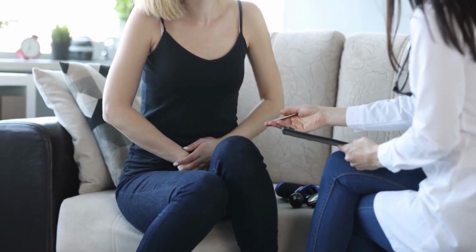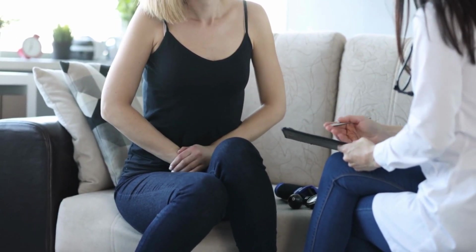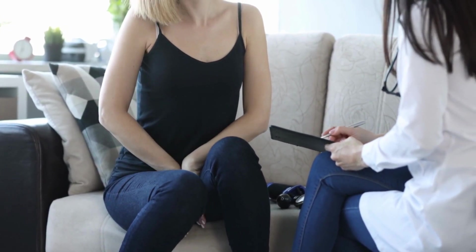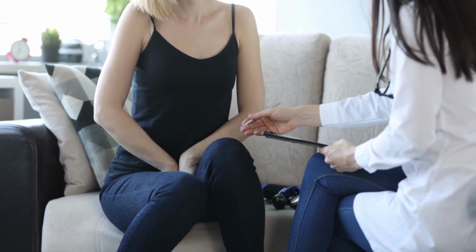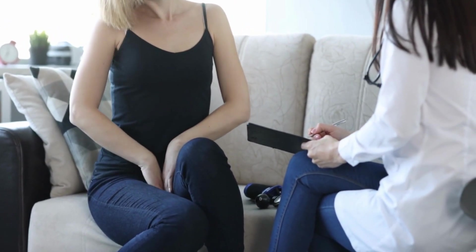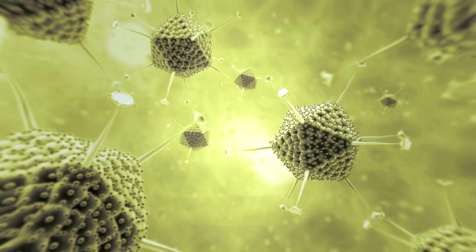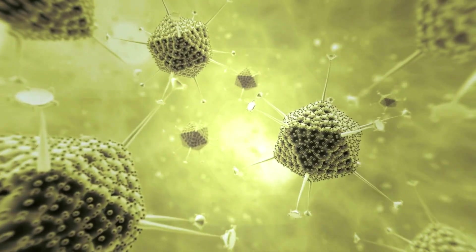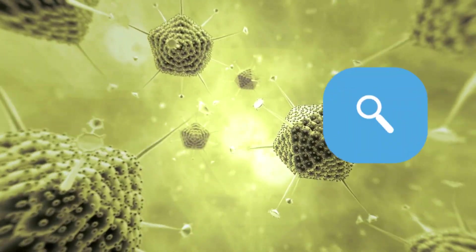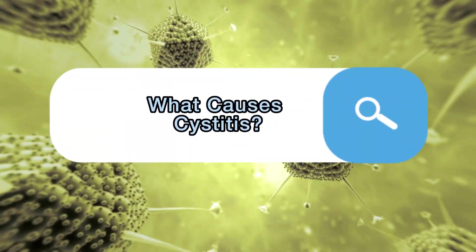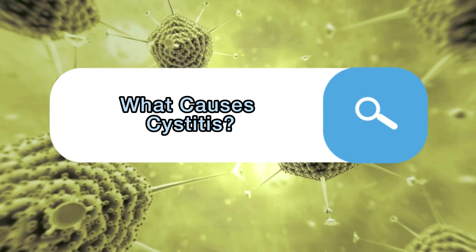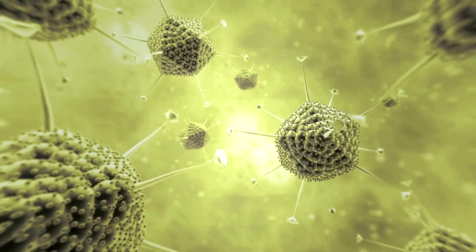Common symptoms of cystitis include a pain and burning sensation during urination, a constant urge to urinate, frequent and small amounts of urine, low-grade fever, foul-smelling and cloudy urine, a feeling of pressure in the abdomen, and pelvic disorders.